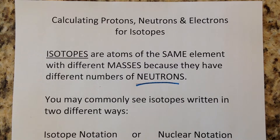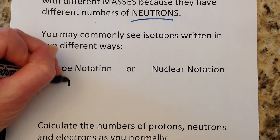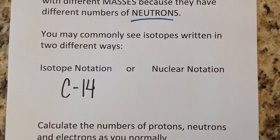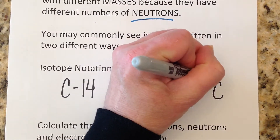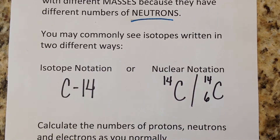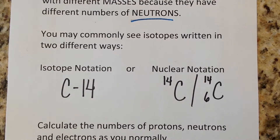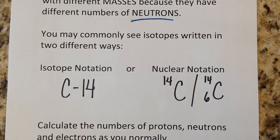We will see isotopes written in two different ways. You'll see isotope notation with the symbol followed by a dash and the mass, or you'll see nuclear notation with the symbol and the mass to the upper left — sometimes also with the atomic number to the lower left. It's not really necessary to put the atomic number there because it doesn't change. Carbon-12, carbon-13, and carbon-14 all have the same atomic number because they are all carbon.